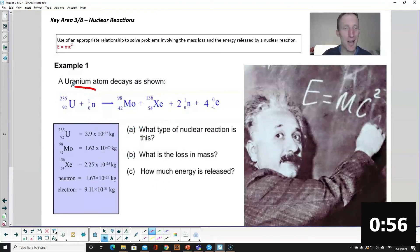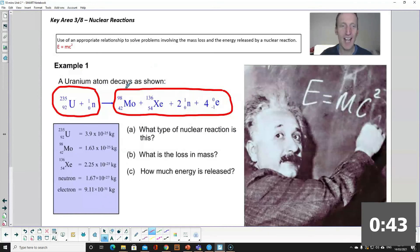Okay using E equals mc squared so you add up the mass of the particles before the reaction using information in your data sheet or in the question. Add up the mass of all the particles afterwards. These numbers just mean you've got two neutrons and four electrons and then you find the difference in mass and it's that difference in mass that you put into E equals mc squared.